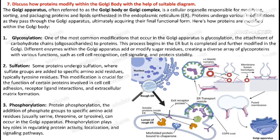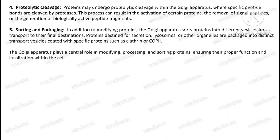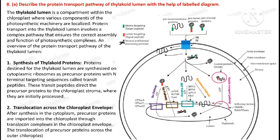Question 7: Describe how proteins are modified within the Golgi body with the help of a suitable diagram. Question 8: Describe the protein transport pathway of the thylakoid lumen with the help of a labelled diagram.